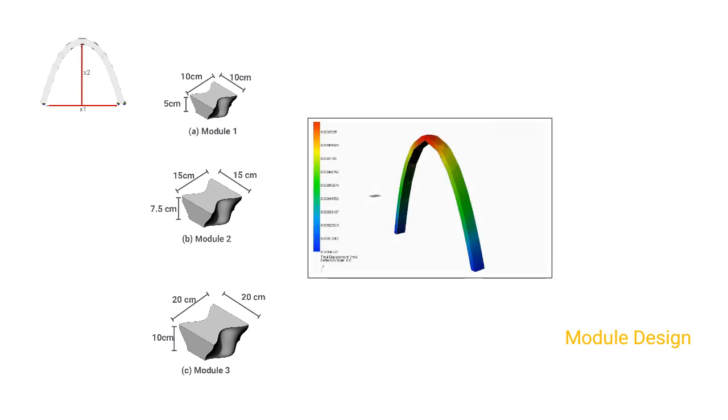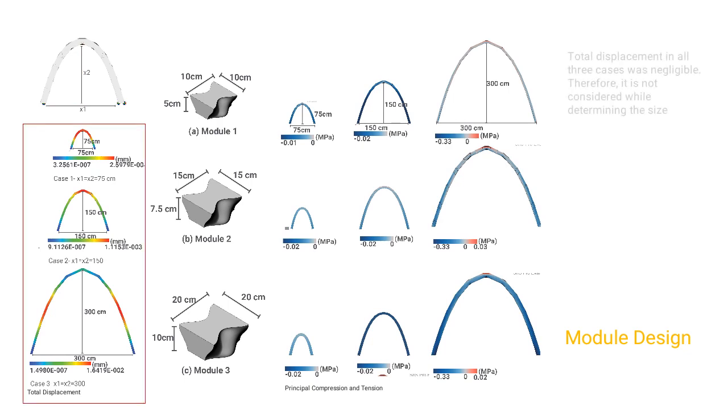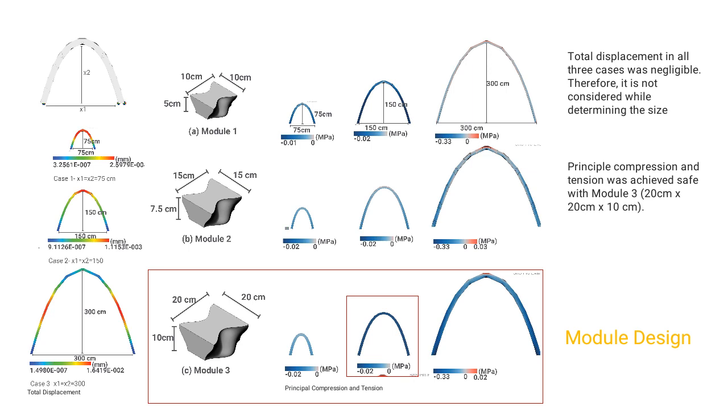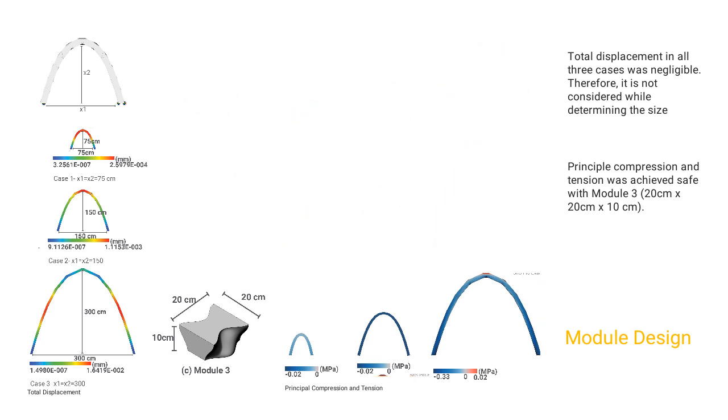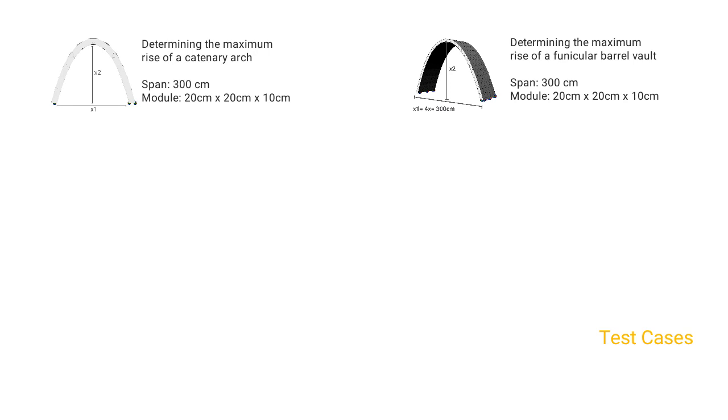The Scan&Solve plug-in to Rhinoceros 5.0 is used for structural simulations. Total displacement and principal compression and tension were analyzed under self-weight. It was observed that total displacement in all three cases was negligible. Principle compression and tension was achieved safe with module 3, 20cm × 20cm × 10cm, for 300cm span and height of up to 150cm. Hence module 3 of size 20cm × 20cm × 10cm was used for further research on catenary arches and funicular barrel vaults of span 300cm and varying heights.